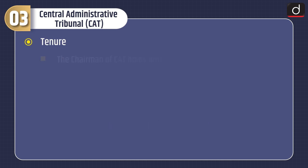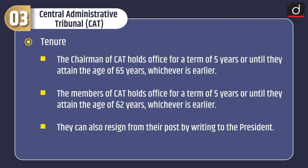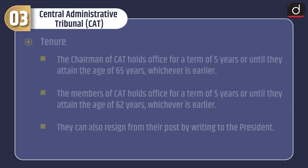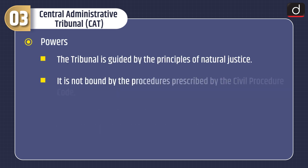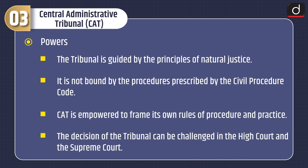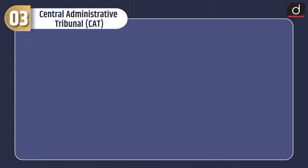Regarding tenure, the chairman of CAT holds office for a term of 5 years or until they attain the age of 65 years, whichever is earlier. The members of CAT hold office for a term of 5 years or until they attain the age of 62 years, whichever is earlier. They can also resign from their post by writing to the President. The Tribunal is guided by the principles of natural justice. It is not bound by the procedures prescribed by the Civil Procedure Court. CAT is empowered to frame its own rules of procedure and practice, and the decision of the Tribunal can be challenged in the High Court and the Supreme Court.